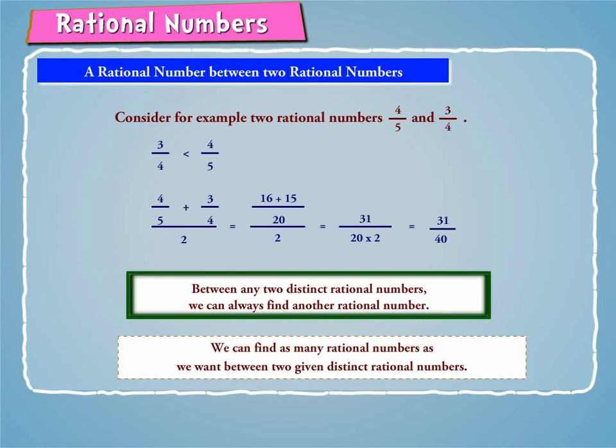In fact, we can find as many rational numbers as we want between two given distinct rational numbers.